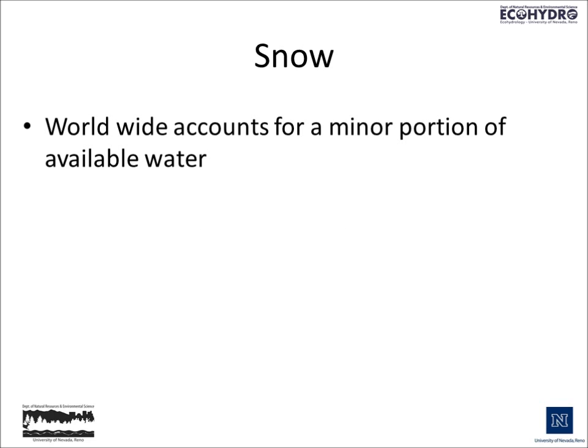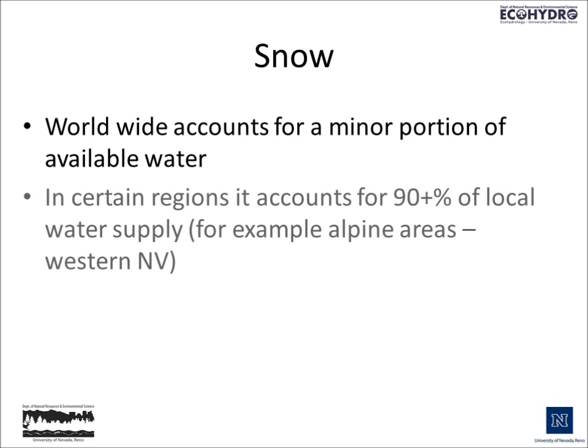Worldwide, snow accounts for a minor portion of the available water. It's water that's available in the solid phase, which is very important when we talk about glaciers, but it's not very important when we talk about natural precipitation that occurs throughout most of the world. However, in certain regions — for example, Nevada in the alpine areas — it accounts for 90 plus percent of the local water supply. That means it's very important in certain areas, while not so important in others.